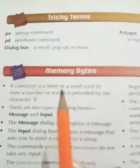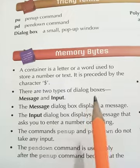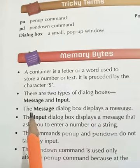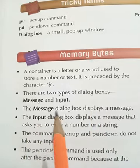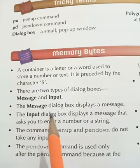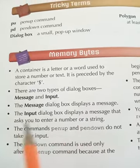Here we have tricky terms. PU: pen up command. PD: pen down command. Dialog box: a small pop-up window. Polygon: a polygon is a flat closed shape with at least 3 sides and 3 angles.